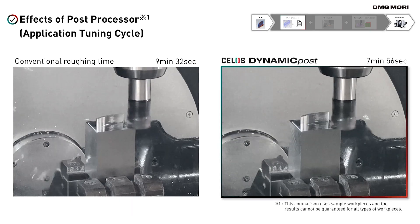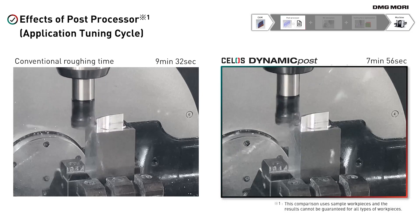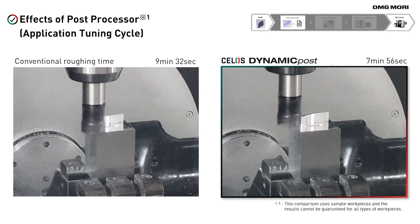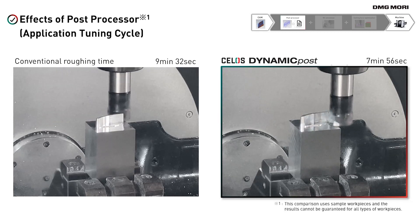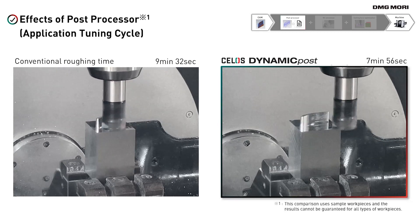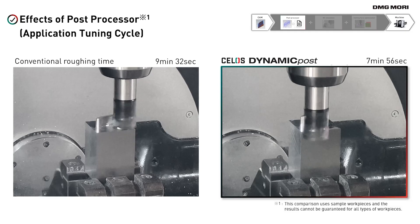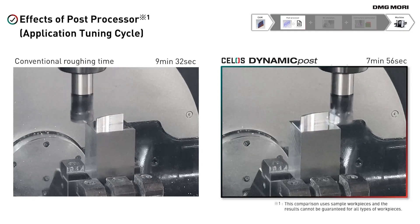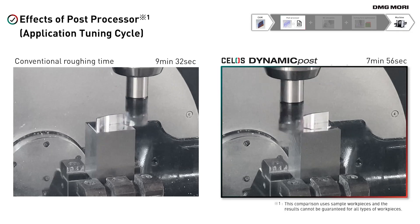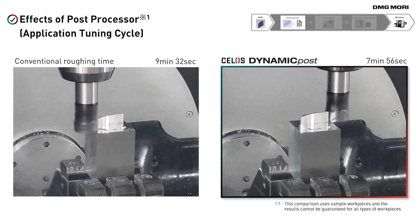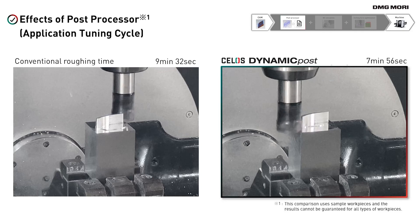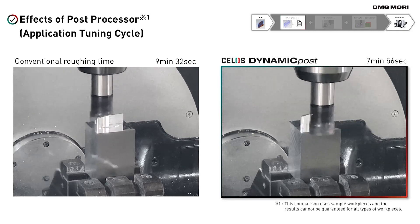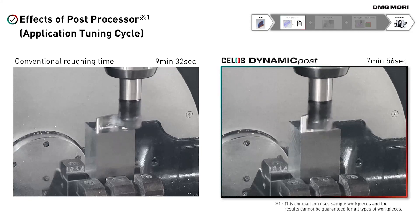One of the unique features of DMG MORI machine tools is the application tuning cycle. With this function, you can control acceleration and deceleration according to the shape and method of machining. The application tuning cycle is just one of the many original functions supported by CELOS Dynamic Post. Utilize them to significantly reduce machining time and create optimized NC programs for maximum machine performance and productivity.